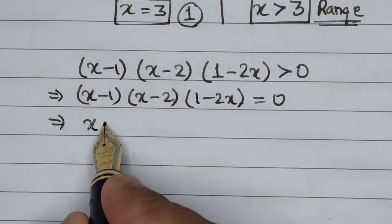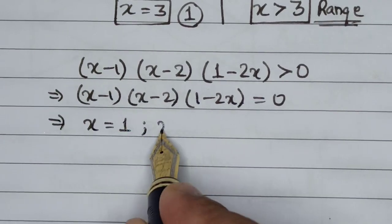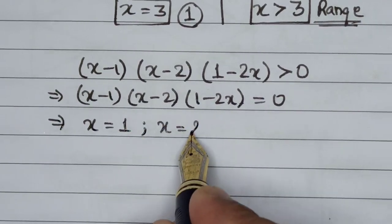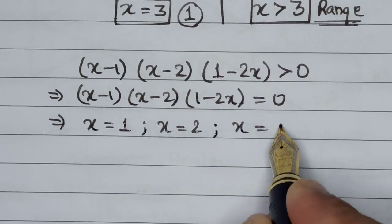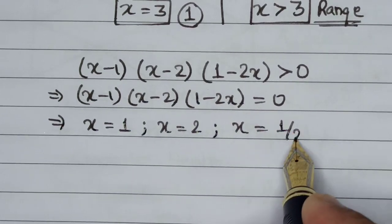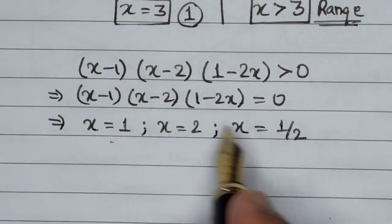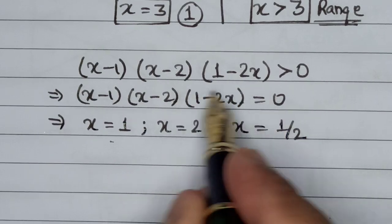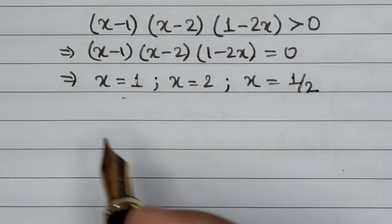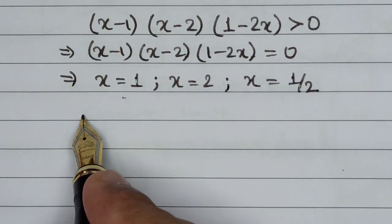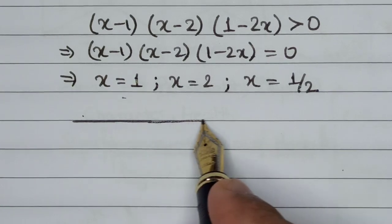This gives us the values: x can be equal to 1, x can be equal to 2, and x can be equal to 1/2. But these are not the final solutions of this inequality — they have just given us a starting point. Now let us draw a number line.